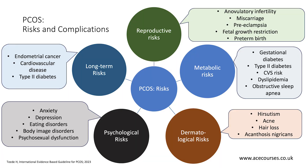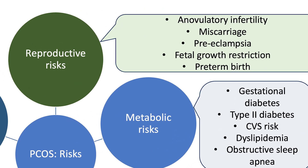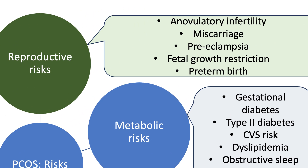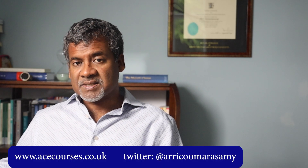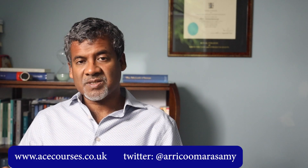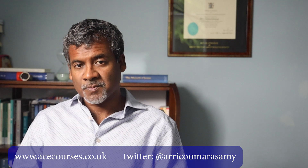There are five reproductive risks of PCOS that you need to know: anovulatory infertility, miscarriage, preeclampsia, fetal growth restriction, and preterm birth. There is a whole separate video on reproductive consequences of PCOS that you can watch to learn more.